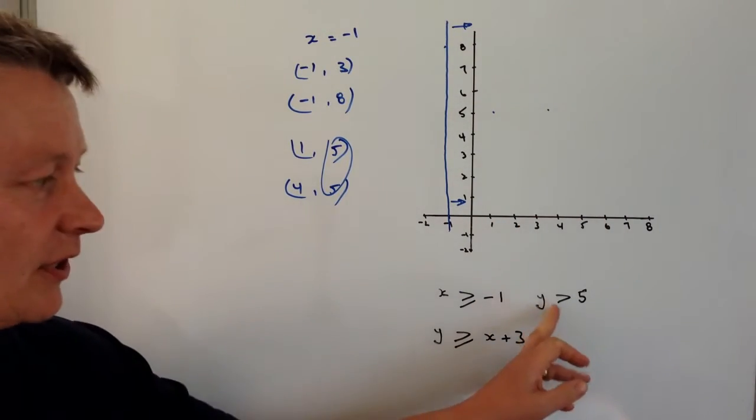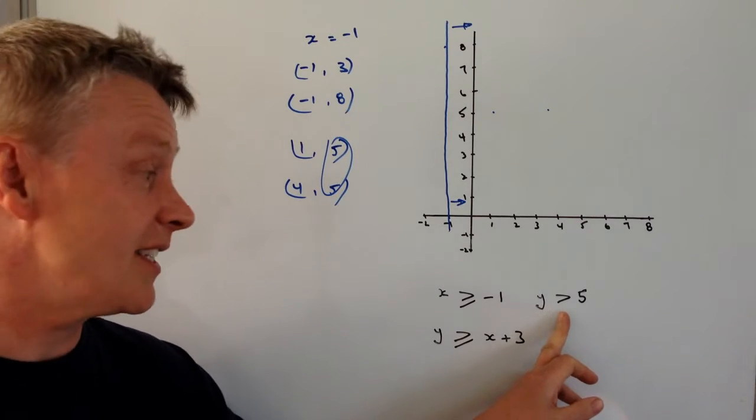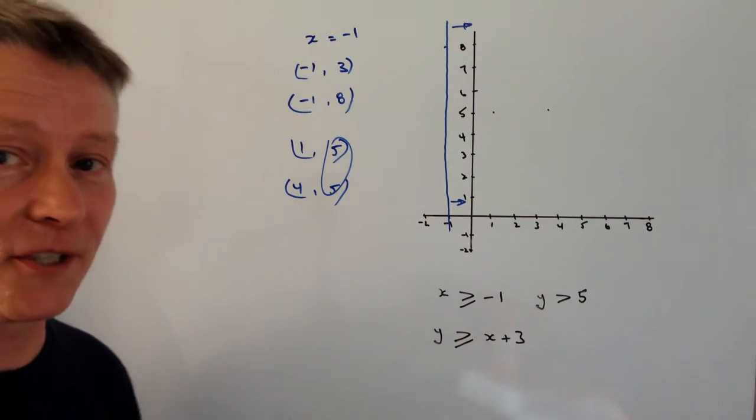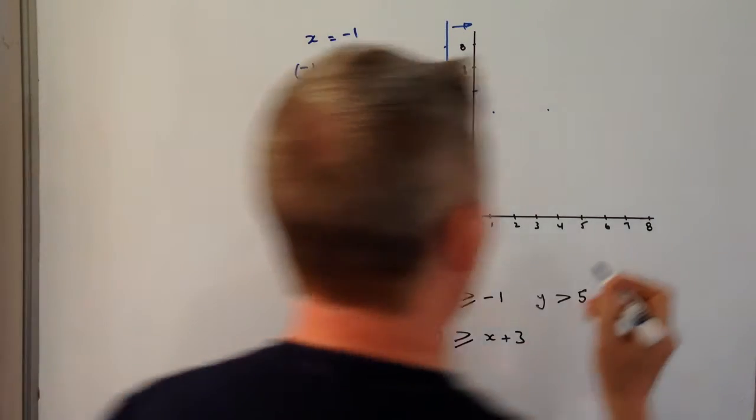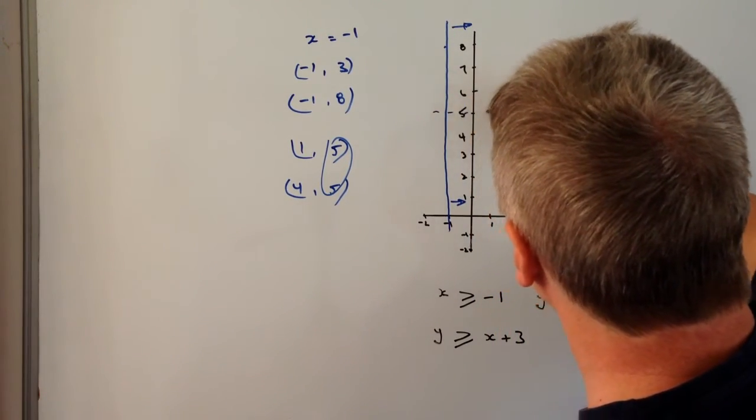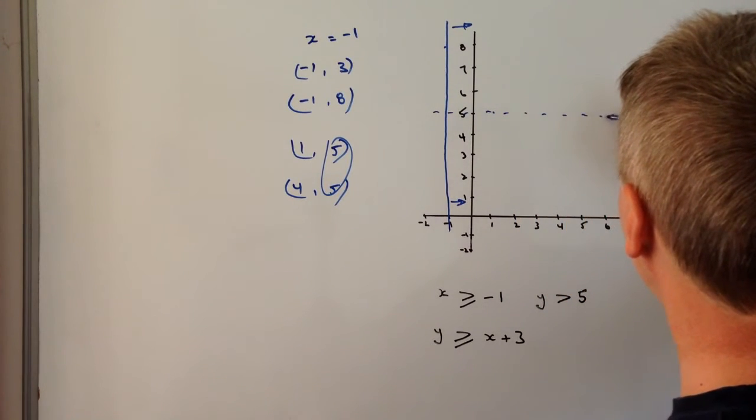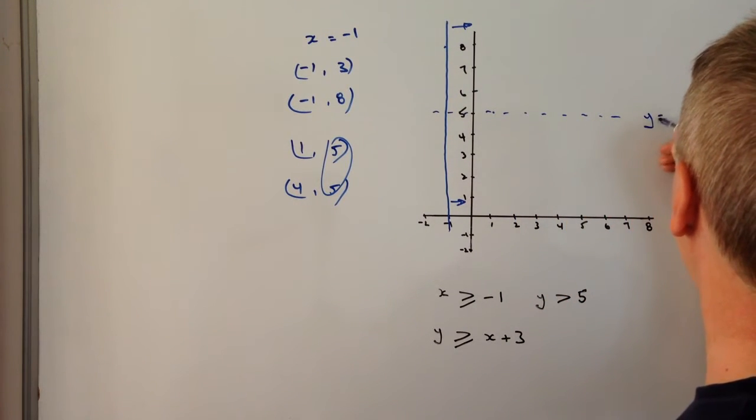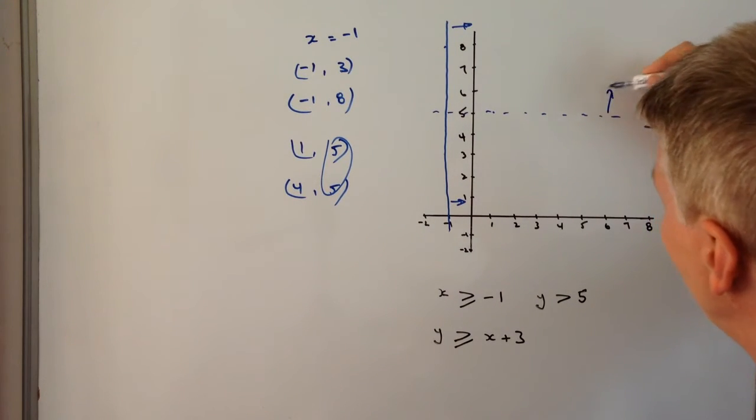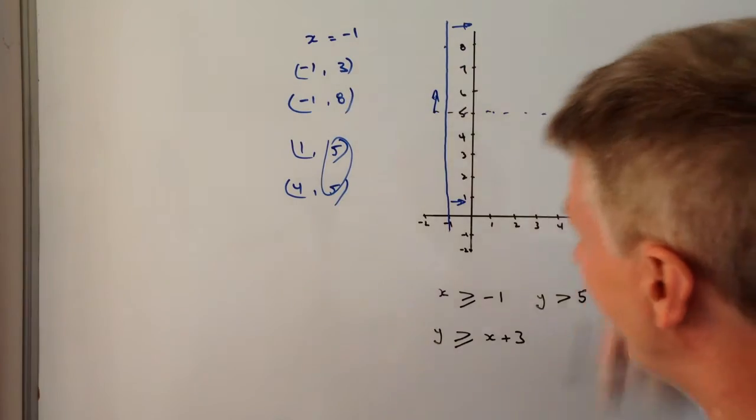OK, now I'm going to draw this as a dash line because it doesn't include the number 5. And again I'm going to turn my back to the camera. So I'm just going to draw along here like that, and this is where Y equals 5, but the inequality is greater than, so it's going to be above this line here.